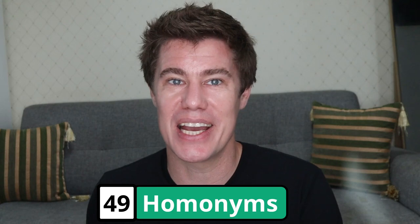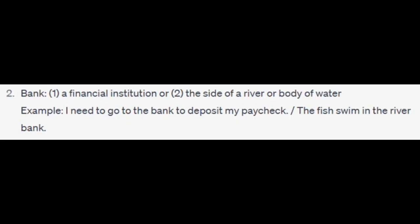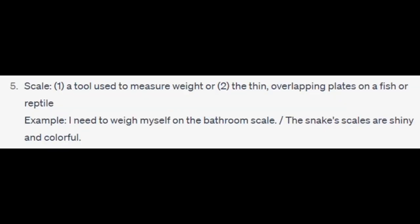Homonyms are commonly mistaken words. You find homophones where the sound is similar but the meaning is different. You find homographs where the writing is the same but the pronunciation is different. Or homonyms where they have the same spelling and pronunciation but the meaning is different. Give me five common homonyms. 'Bear' — a large furry animal, or to tolerate something. 'Bank' — a financial institution, or the side of a river. 'Bat' — a flying mammal, or sports equipment. 'Match' — a small stick for lighting a fire, or a competition between two teams. 'Scale' — a tool to measure weight, or the thin overlapping plates of a fish or reptile.